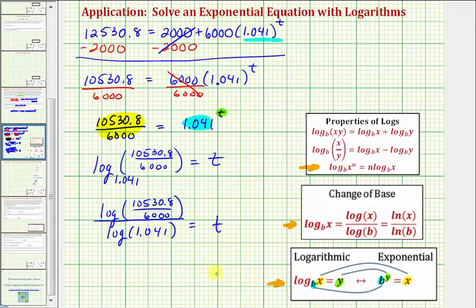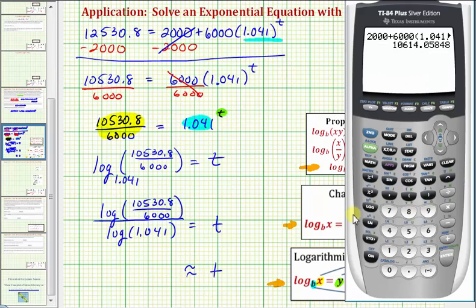And now we'll go to the calculator and round T to the nearest year. The common log key is here, so common log of the quotient, 10,530.8 divided by 6,000, close parenthesis, divided by the common log of 1.041, close parenthesis and enter. We're asked to round to the nearest year, so we'll round this to 14 years.